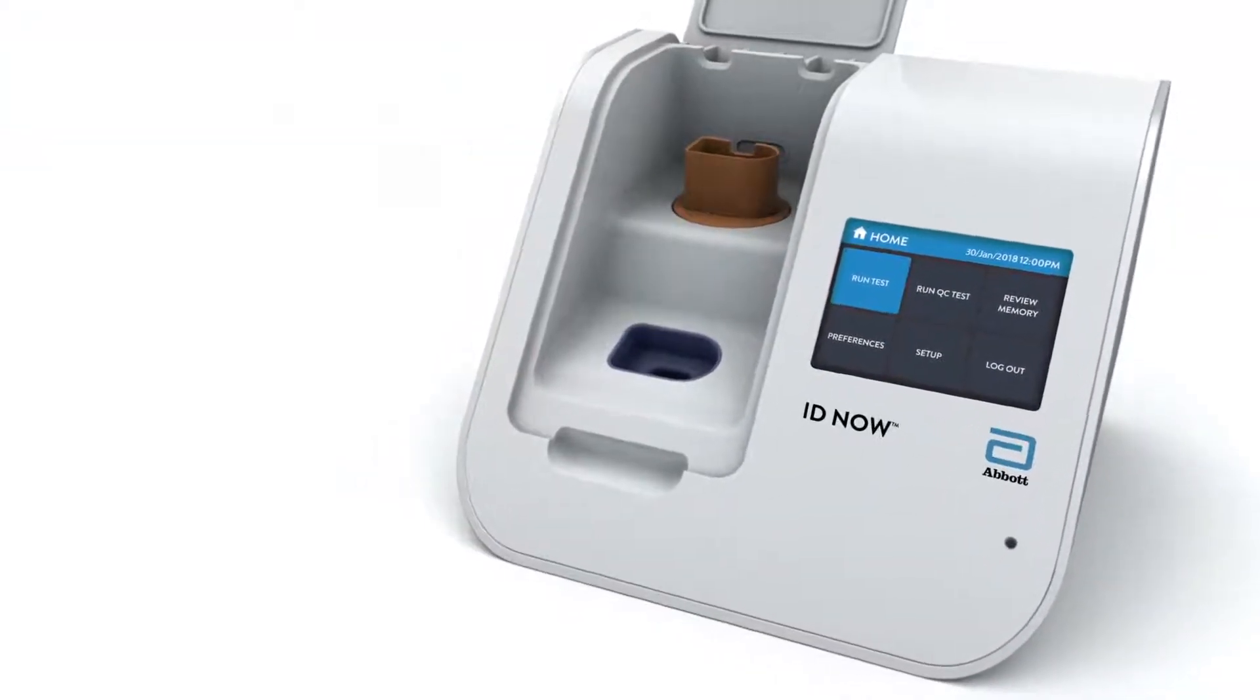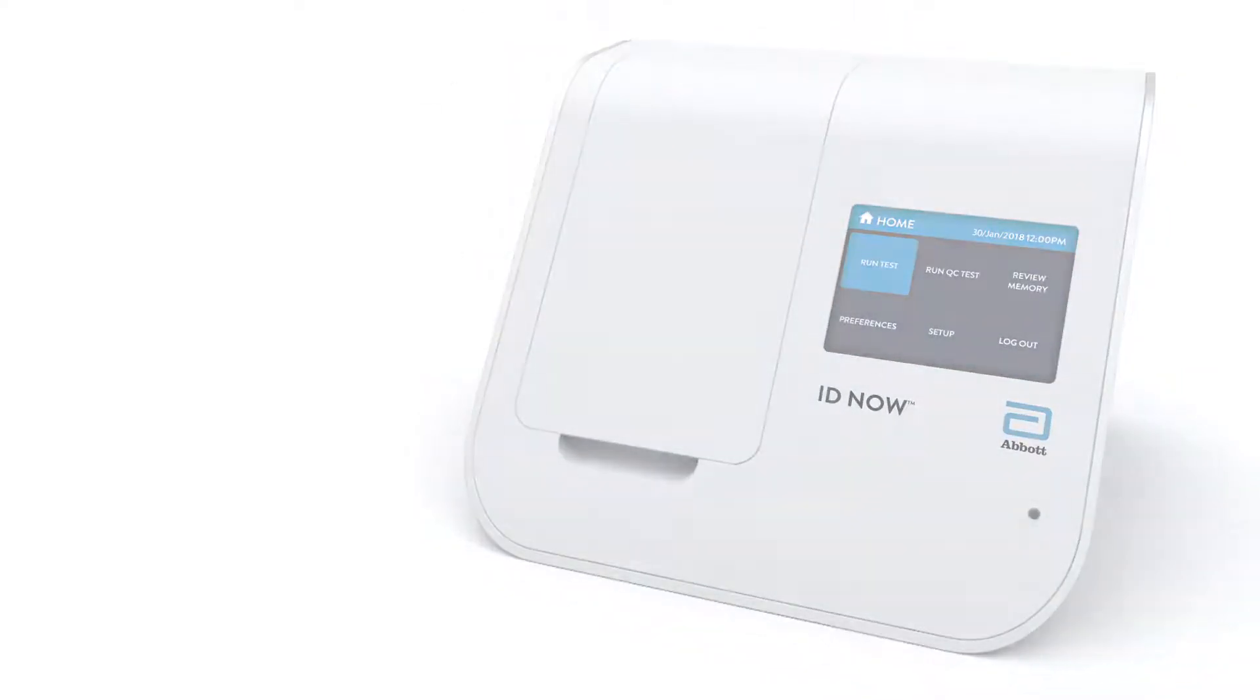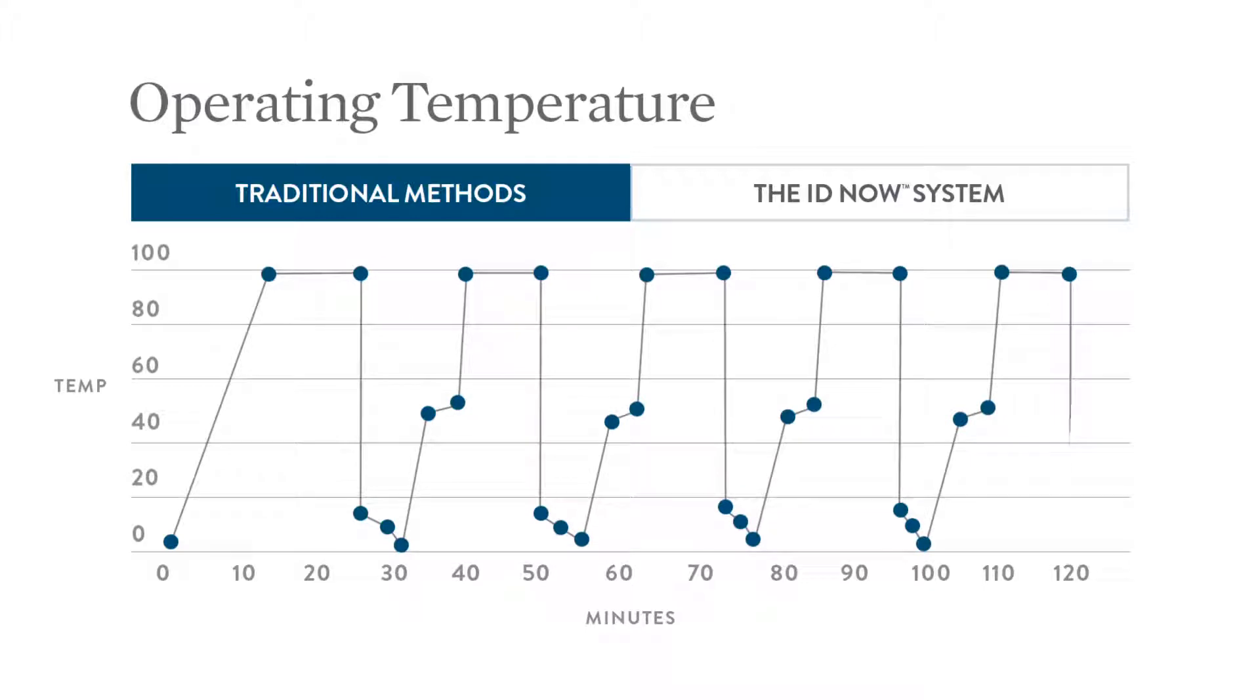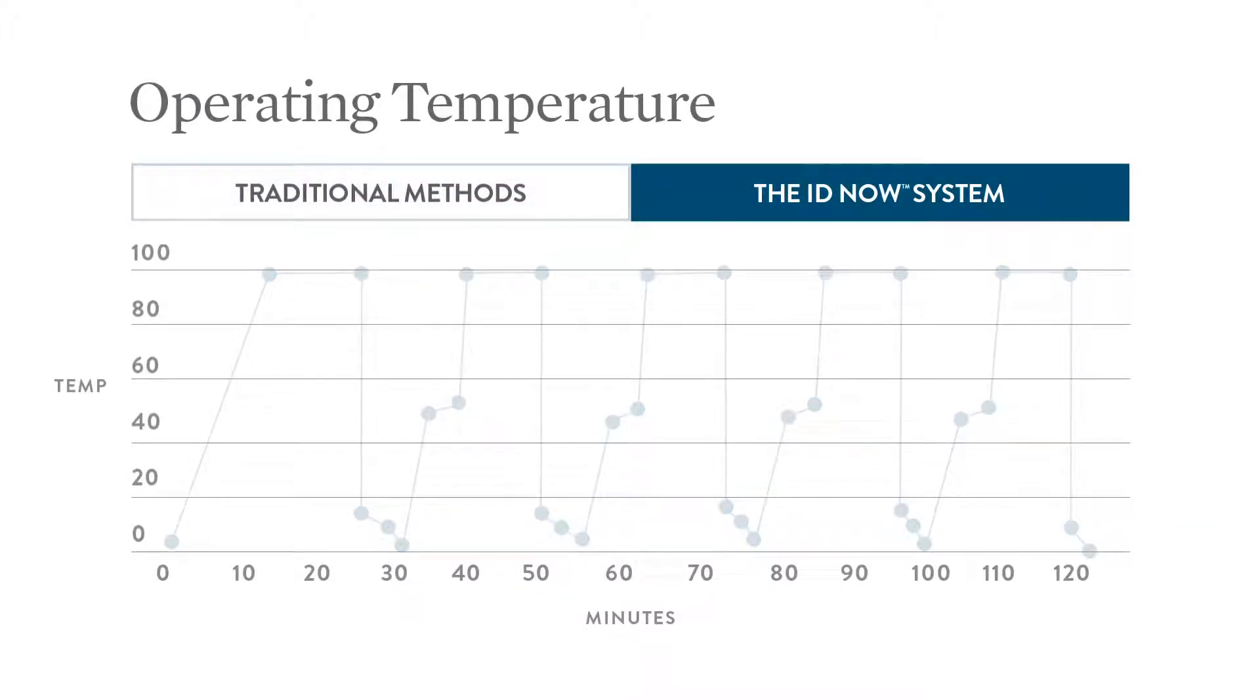The IDNow system features a unique nucleic acid amplification chemistry which works at one constant temperature. Traditional molecular methods heat and cool throughout the process. Because IDNow warms up and operates at one constant temperature, it achieves results significantly faster.